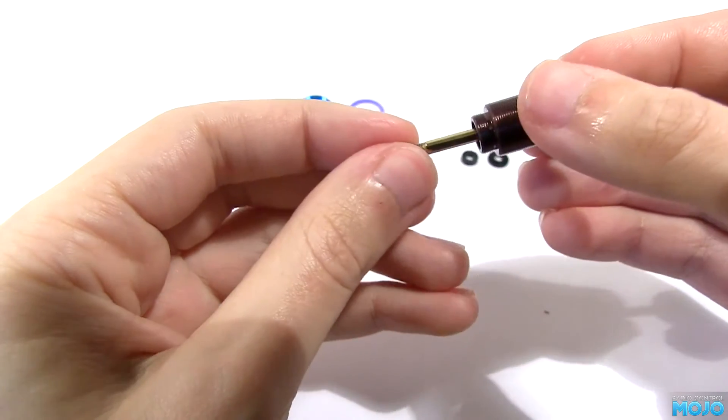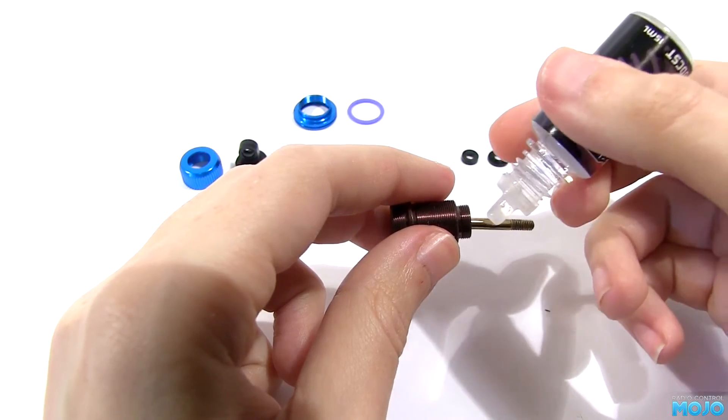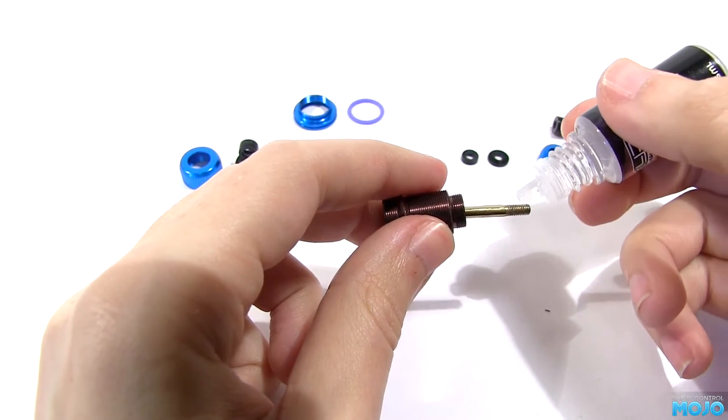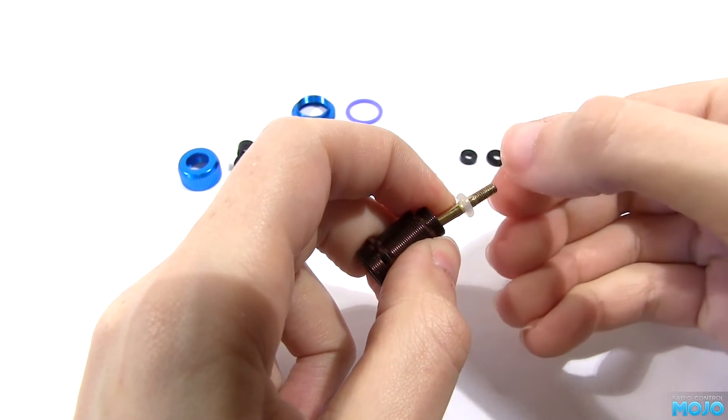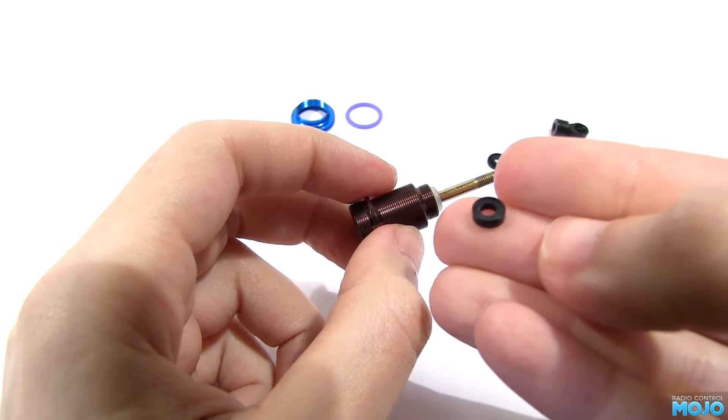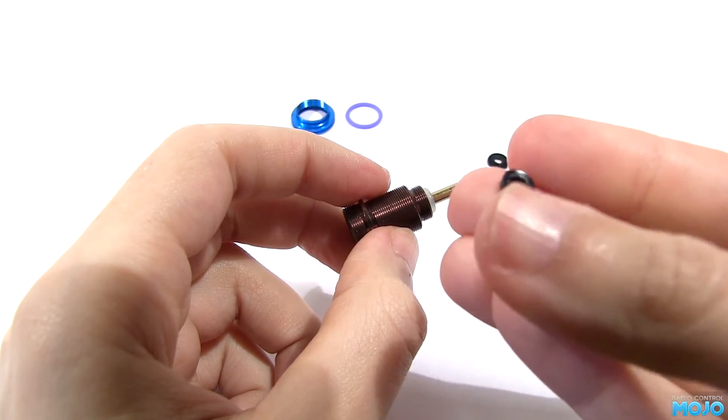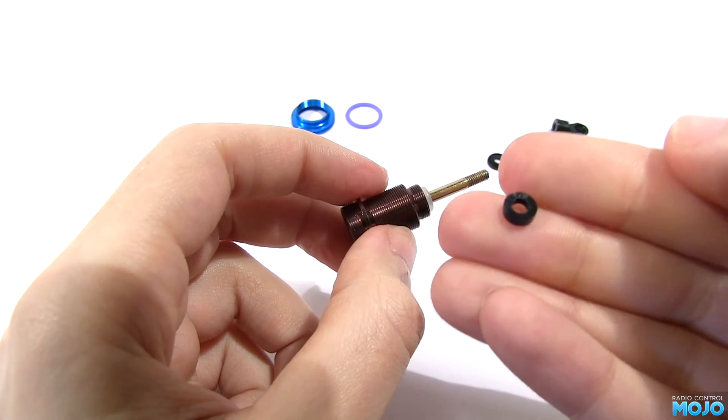Slide the shaft through the damper body and apply some of the silicone oil to lube up the shaft and the threads. Slide one of the o-rings on. Next insert the spacer. It's not the same on both sides. One side is shaped to fit the o-ring, the other side is flat.